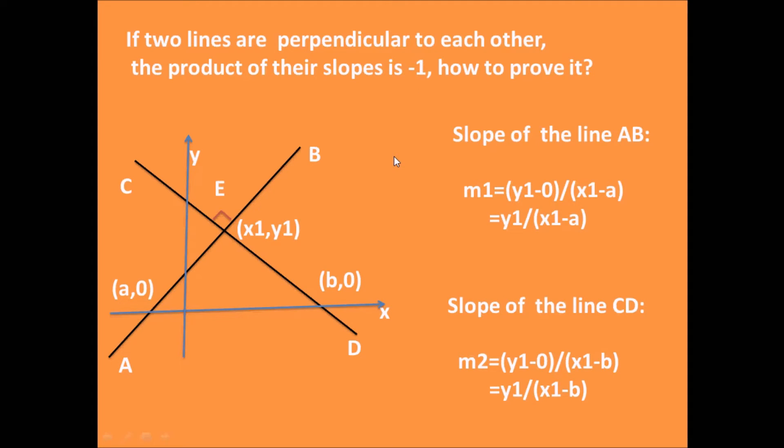For example, if we have two lines AB and CD, they are perpendicular to each other, and the crossing point E has coordinates (x1, y1). Line AB has x-intercept at A and line CD has x-intercept at B.